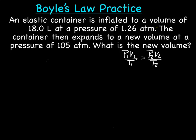Okay, let's make a list of our variables and let's read through the problem carefully to figure out what our 1s and 2s are. So it says an elastic container is inflated to a volume of 18 liters at a pressure of 1.26 ATM. Being that we have 18 liters at this particular pressure, those two should go together.